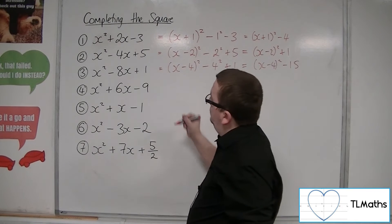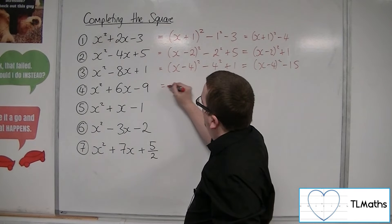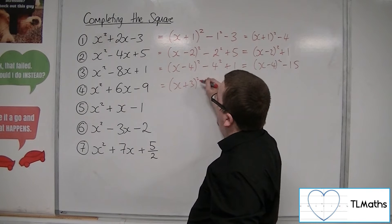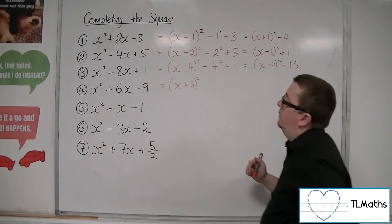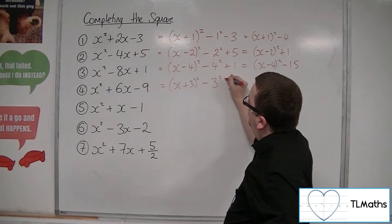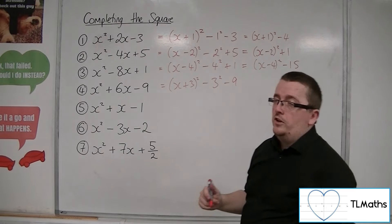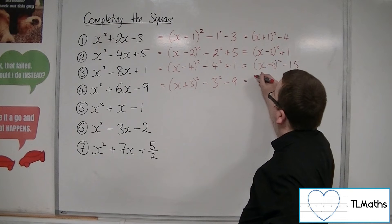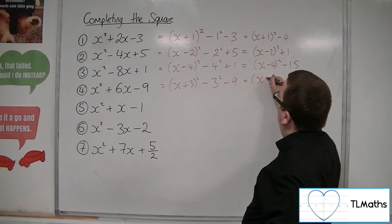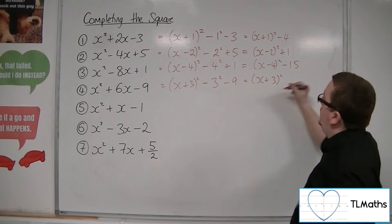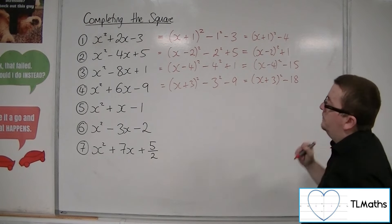Number 4: we're going to have x plus 3 squared. Half of 6 is positive 3, so take away 3 squared. And we've also got the minus 9 on the outside. So we've got x plus 3 squared, minus 9, take away 9, so minus 18.